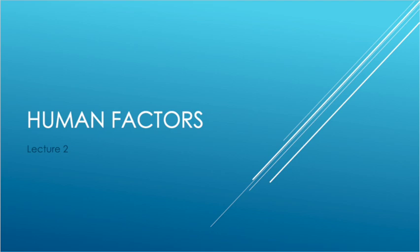Welcome back to our second class of human factors. Yesterday we talked a lot about the PEAR model, we talked about some examples that fall into the PEAR model, and we had an assignment using the PEAR model to understand how these different factors relate to accidents or mistakes that happen. Today we're going to talk a little more specifically about the application of the PEAR model to aviation maintenance.